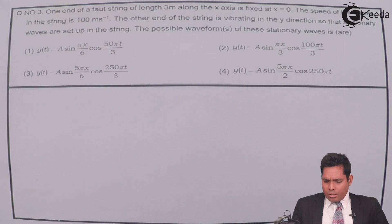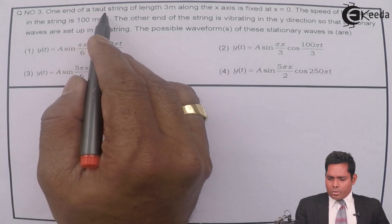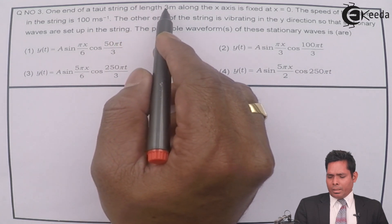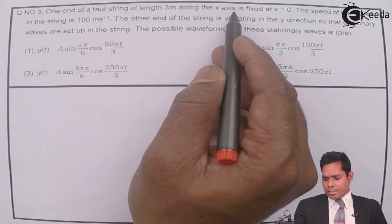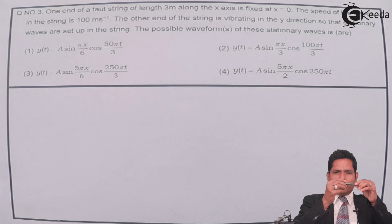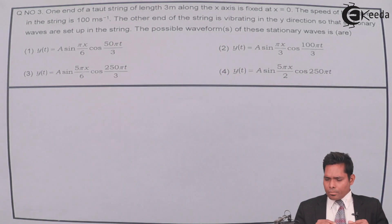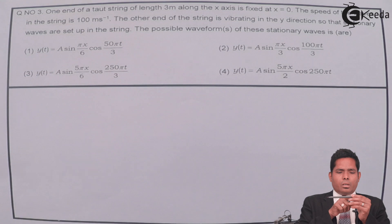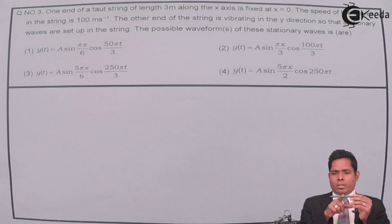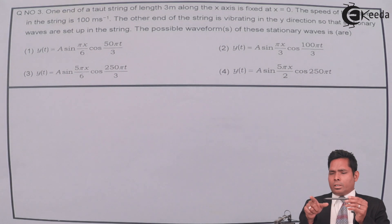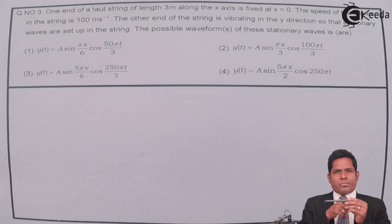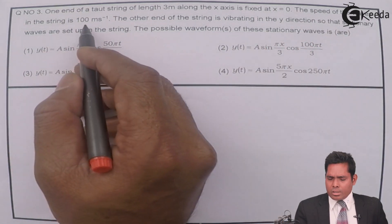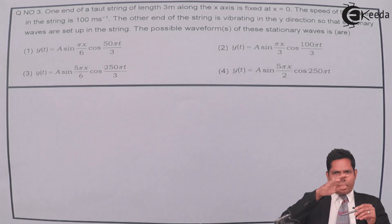The question is: one end of a string of length 3 meters is lying along the x-axis, fixed at x=0. The string moves along the x-axis up to a distance of 3 meters. This end is fixed and the other end is free. The speed of waves in the string is 100 meters per second.